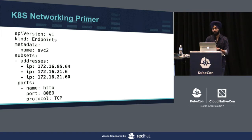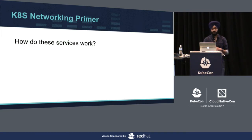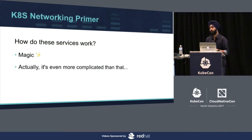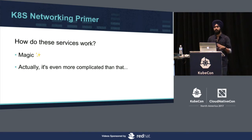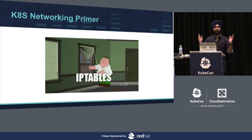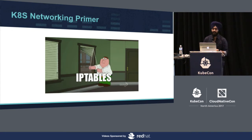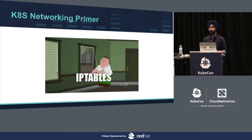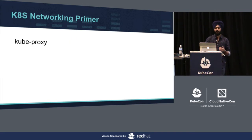So how do these services work? It's magic — actually it's even more complicated than magic. Any guesses? IP tables. IP tables can actually do everything. Fortunately, we don't have to mess with IP tables manually. There's a Kubernetes component called kube-proxy that does it for us.